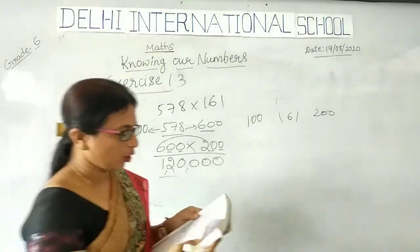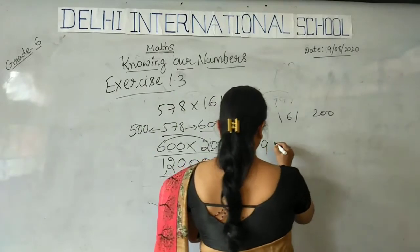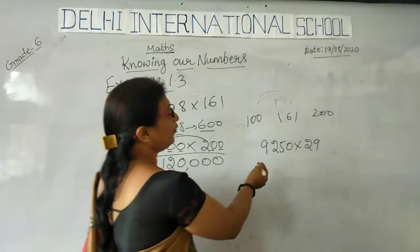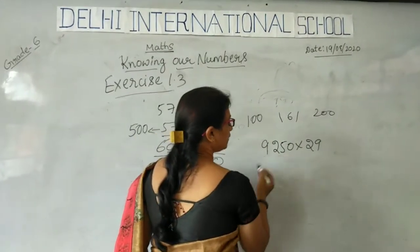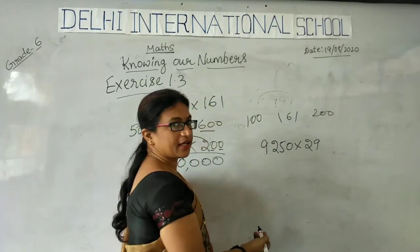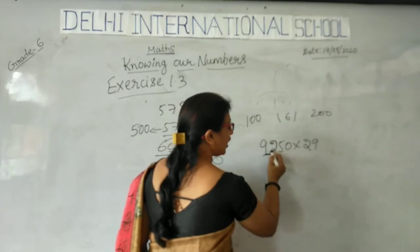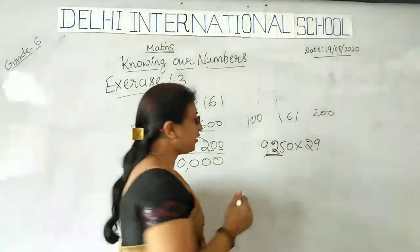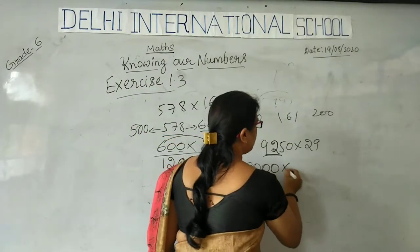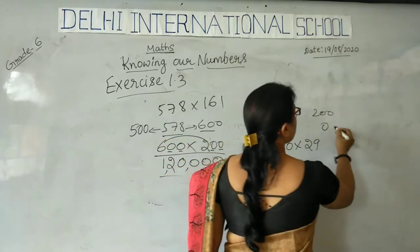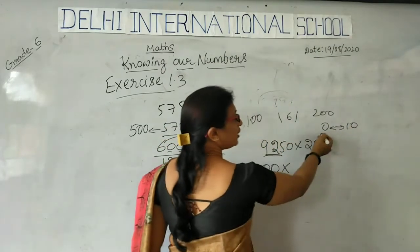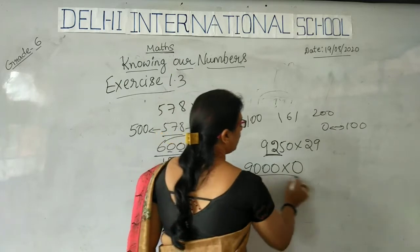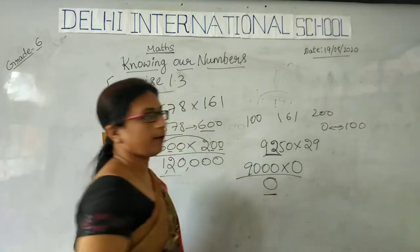Another problem using the general rule: 9,250 into 29. So 9,250 — is it nearer to 9,000 or 10,000? It is nearer to 9,000 because above 9,500 it goes to 10,000 and below 9,500 it stays at 9,000. And 29 — is it nearer to 0 or 100? It is definitely nearer to 0, so I write 0. Therefore 9,000 into 0 is 0.